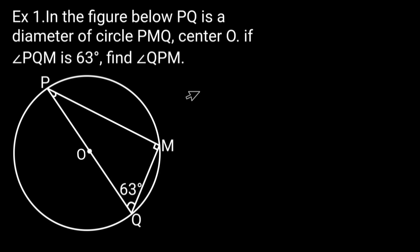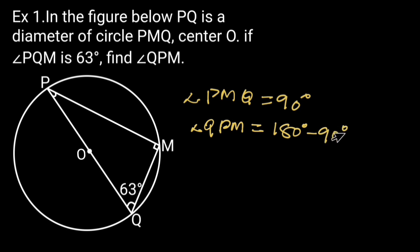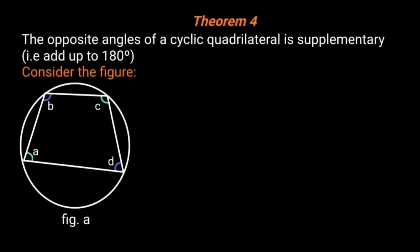Example 1: In the figure below, PQ is a diameter of circle PMQ, center O. If angle PQM is 63 degrees, find angle QPM. Solution: Angle PMQ is equal to 90 degrees — reason: angle in a semicircle. Therefore angle QPM is equal to 180 degrees minus 90 degrees minus 63 degrees, which equals 27 degrees. Reason: sum of angles in a triangle.